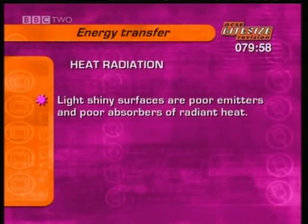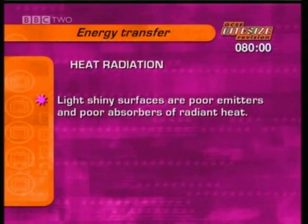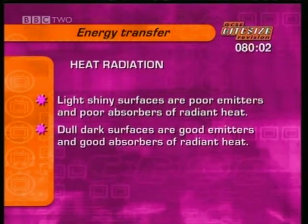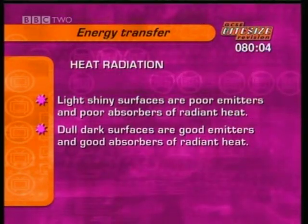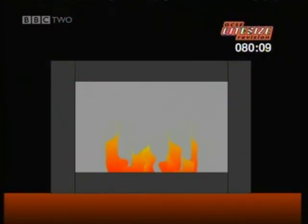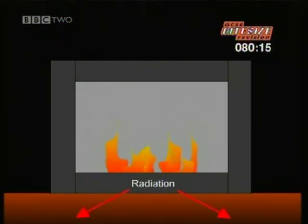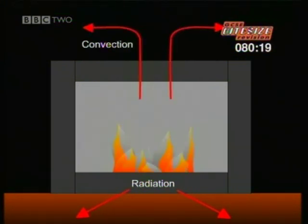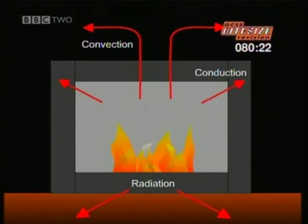Light, shiny surfaces are poor emitters and poor absorbers of radiant heat. And dull, dark surfaces are good emitters and good absorbers of radiant heat. To sum up the transfer of heat energy, we feel the heat of the fire in all three ways: directly by radiation, through hot air rising by convection, and by conduction through the ground or the fire surround.